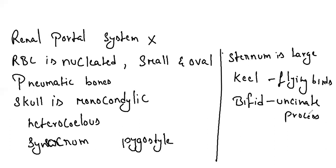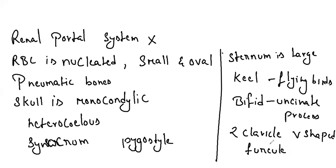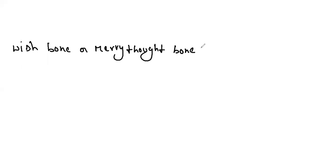Foramen triosseum is found in the pectoral girdle. Two clavicle bones fuse to form a V-shaped furcula, otherwise called wishbone or merry-thought bone, which acts as a spring between the two girdles. For mammals, there is no fusion of two clavicles — no wishbone. This wishbone is absent for flightless birds — furcula is absent in flightless birds.